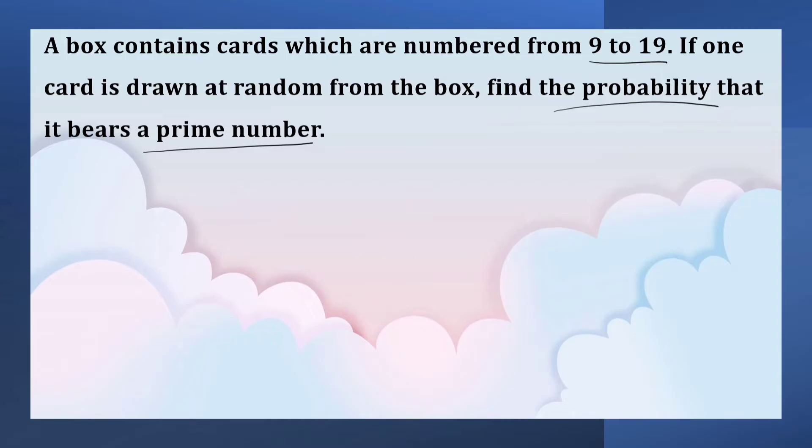So, the possible outcomes are: What are they? 9 to 19 means 9, 10, 11, 12, 13, 14, 15, 16, 17, 18, 19.